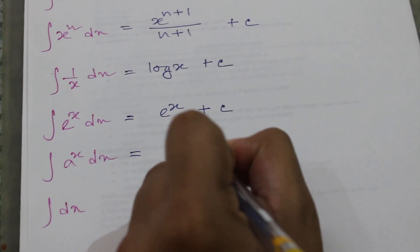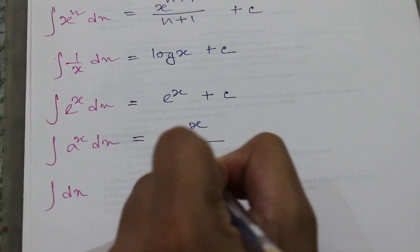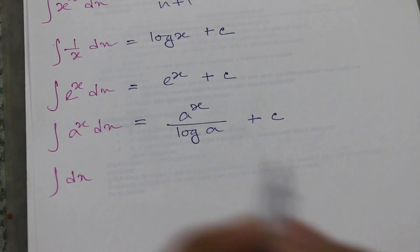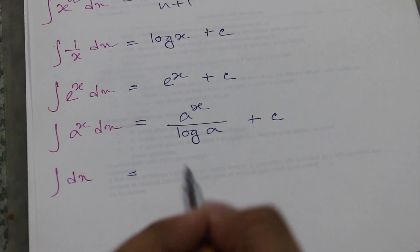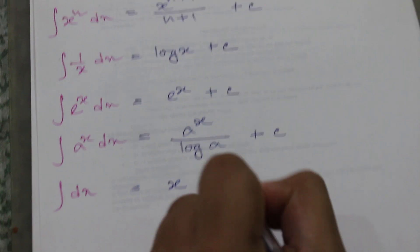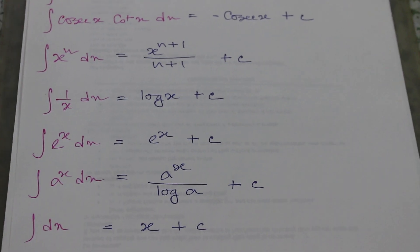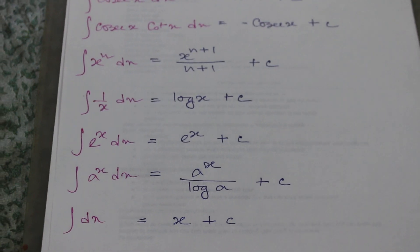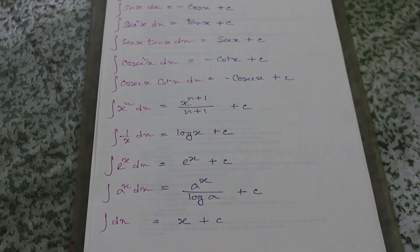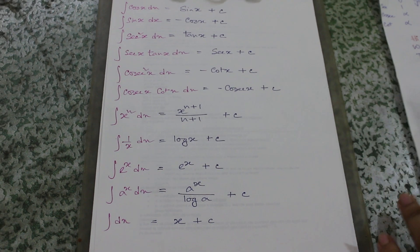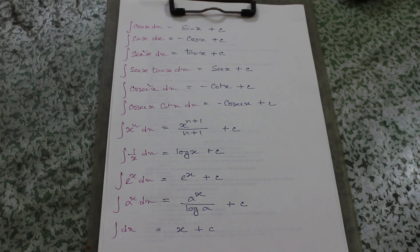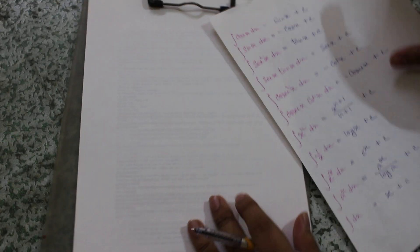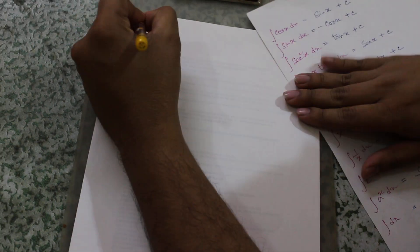For a to the power x, the integral will be a to the power x divided by log a, plus c. If we integrate dx we will get x — just as if we differentiate x we get 1, so if we integrate 1 we get x plus that constant.